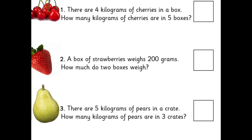There are 4 kilograms of cherries in a box. How many kilograms of cherries are in 5 boxes? That's 4 times 5 — you can always draw an array for it if you don't know, or you could count in 5s on your fingers. A box of strawberries weighs 200 grams — how much do 2 boxes weigh? That's a really easy times. There are 5 kilograms of pears in a crate — how many kilograms of pears are in 3 crates? That's another 5 times table: it's 3 times 5.